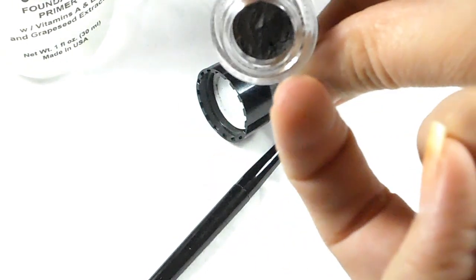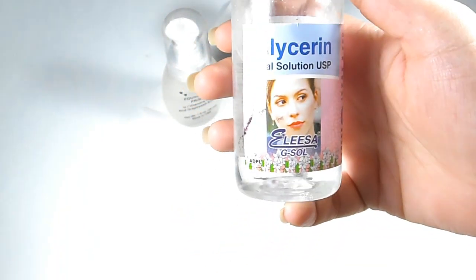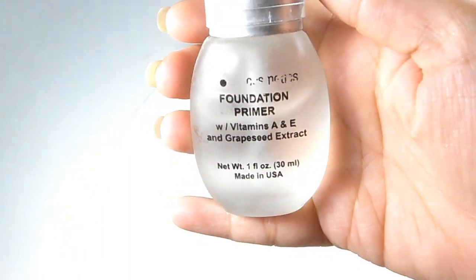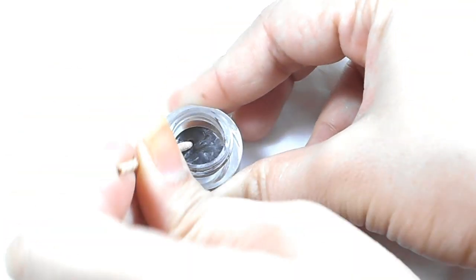The first important thing that we need is glycerin. You can easily find it anywhere. You need a few toothpicks and finally you need a clear face primer. First, you're gonna scramble your eyeliner with a toothpick.